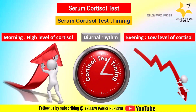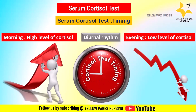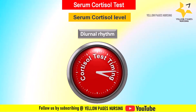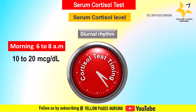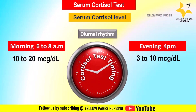Sometimes random cortisol tests may be performed without regard to the time of day — for example, in emergency situations or when evaluating acute adrenal insufficiency. The standard collection times are: morning, between 6 AM and 8 AM, where the normal level ranges between 10 to 20 micrograms per deciliter, and evening at 4 PM, where the level ranges between 3 to 10 micrograms per deciliter.